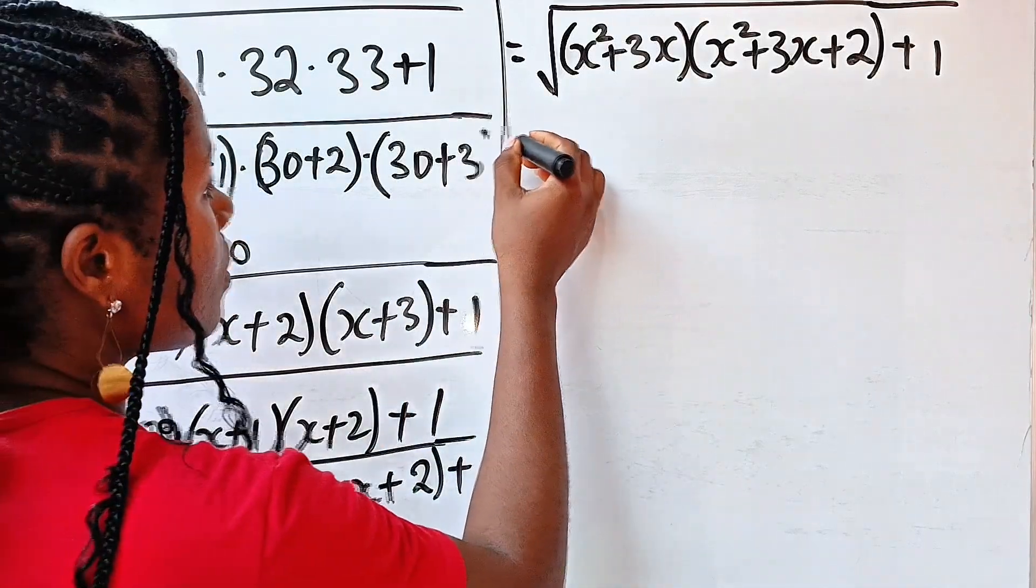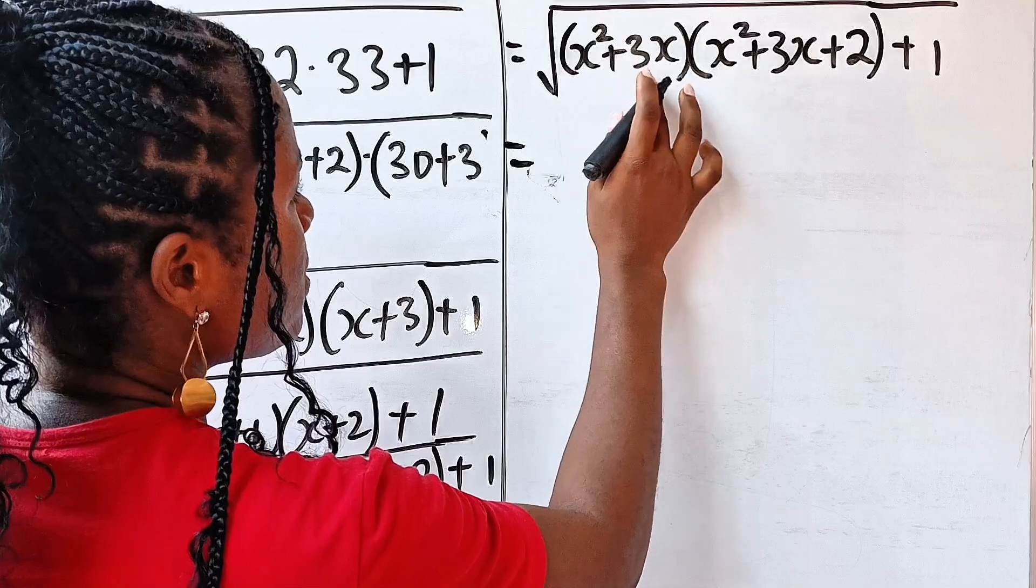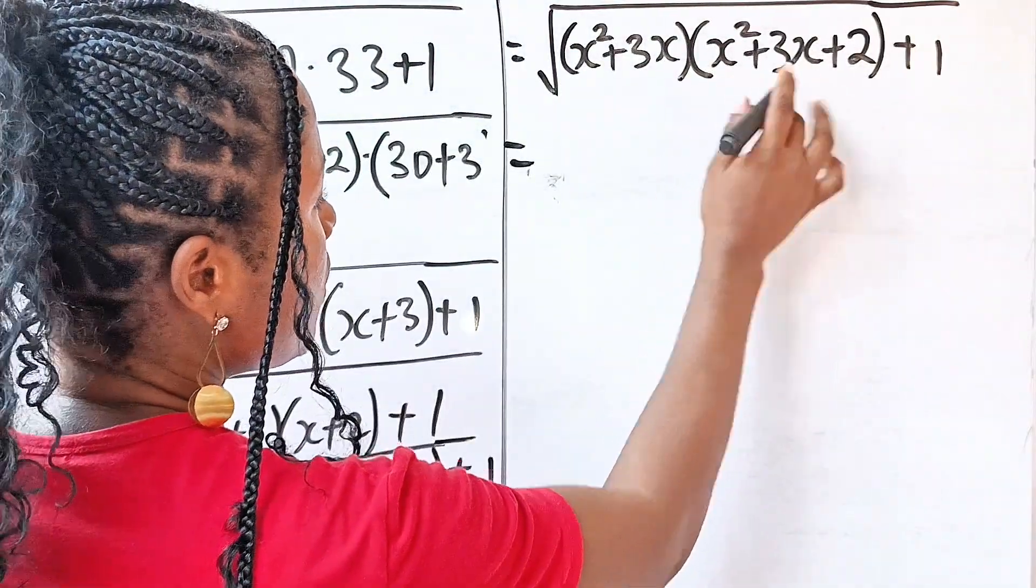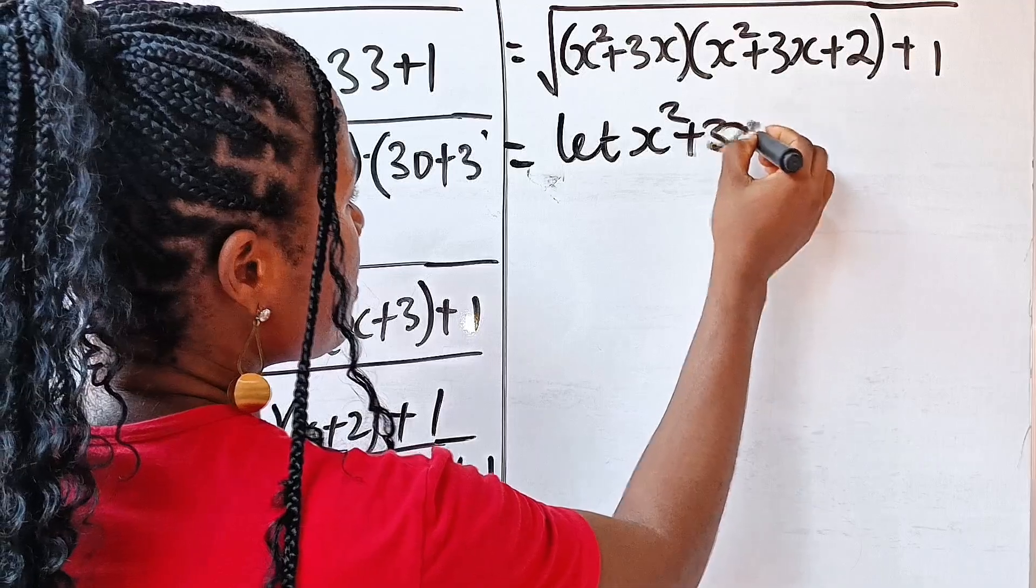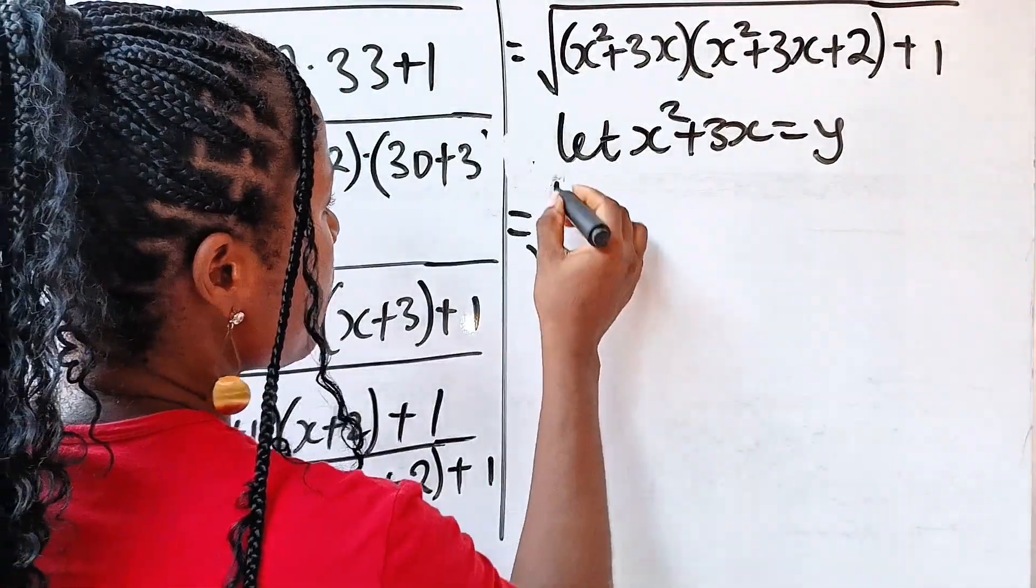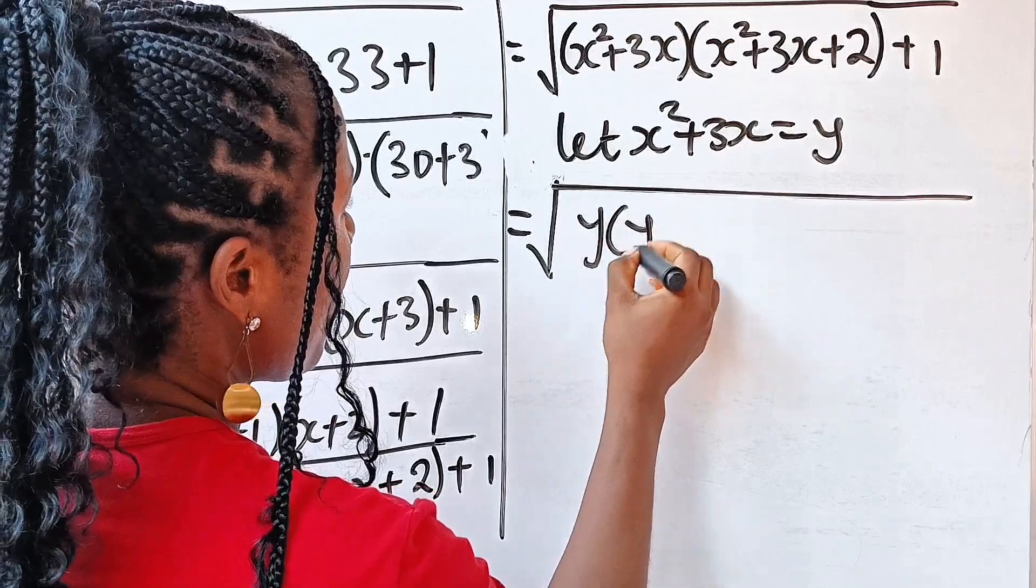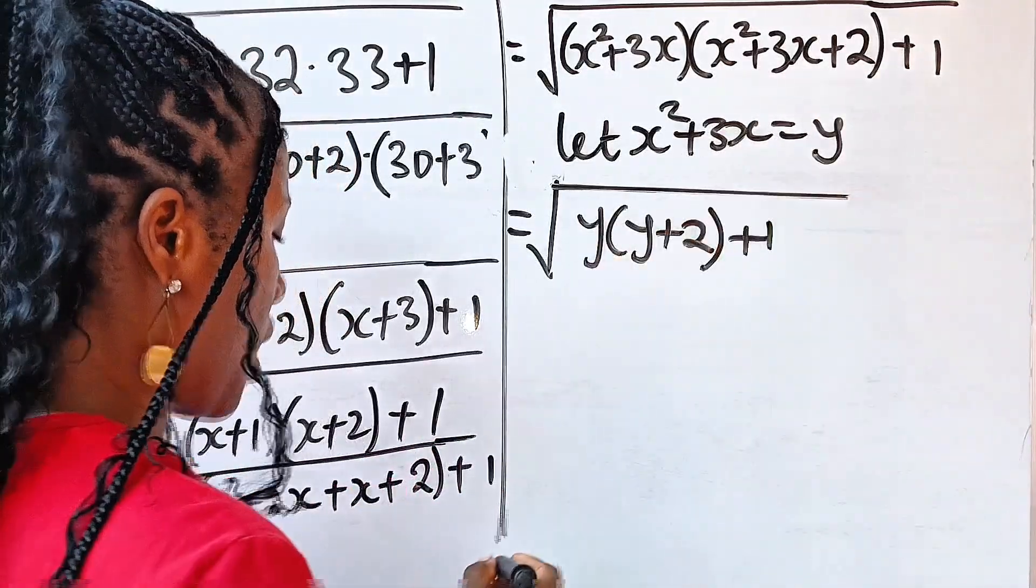Now, back to what we are doing, this is equal to, I noticed that we have x squared plus 3x here, x squared plus 3x, so we can say let x squared plus 3x be equal to y. So if we say that, that means we have square root of y multiplied by y plus 2, right? Then plus 1.